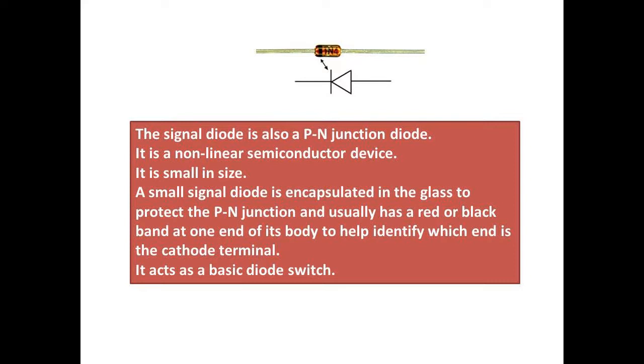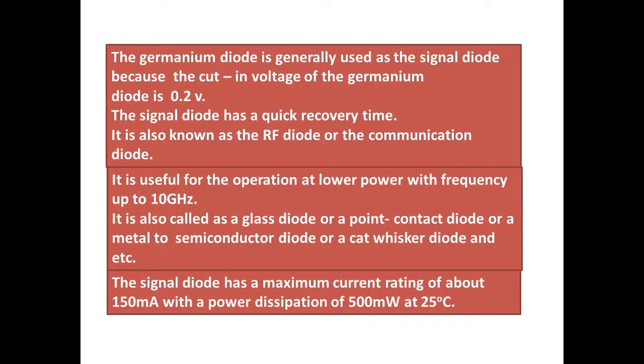It acts as a basic diode switch. The germanium diode is generally used as the signal diode because the cut-in voltage of the germanium diode is 0.2 volts.